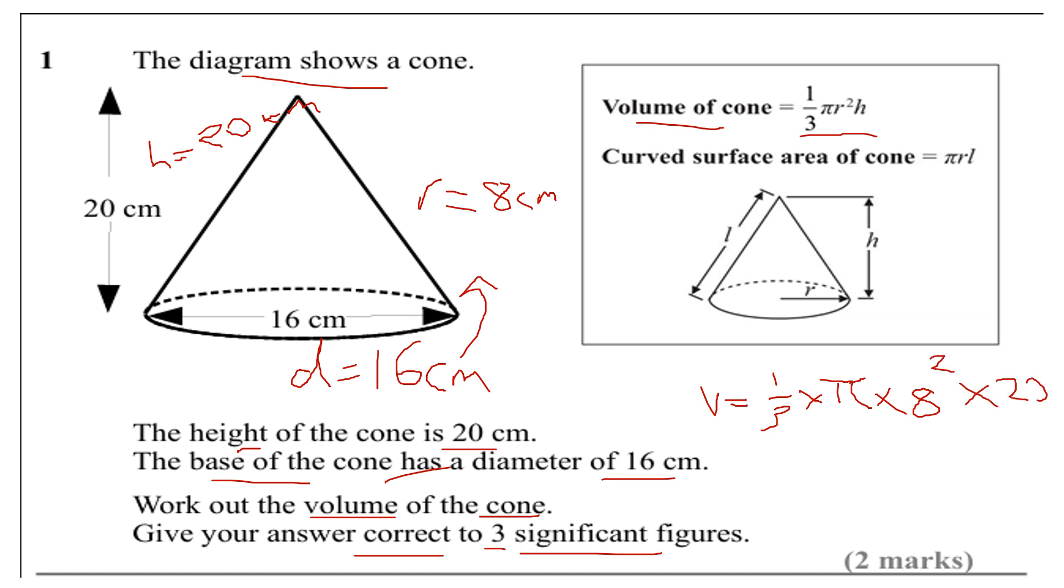8 squared is 64. 64 times 20, if I'm not mistaken here, is 1,280. Divided by 3, so volume equals 1,280 thirds pi.